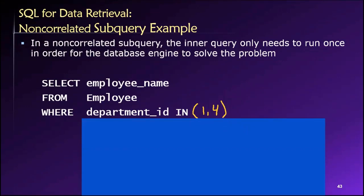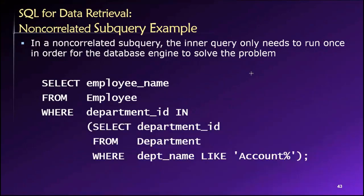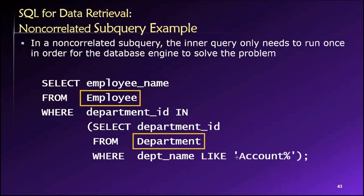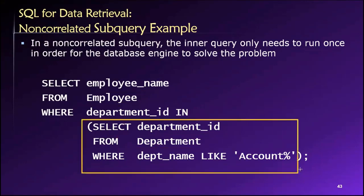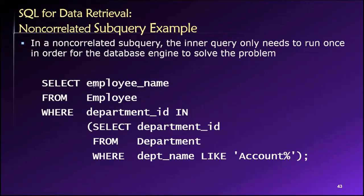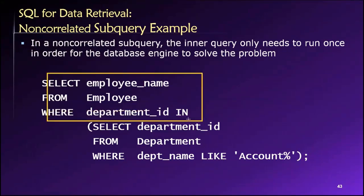The other thing I wanted to point out is that we are pulling data from the employee table in the outer query and from the department table in the inner query. So a sub query allows us to pull information from two different tables in order to answer the entire query. The inner query pulls information from the department table, and the outer query pulls information from the employee table.